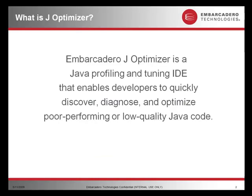In general, Embarcadero J-Optimizer is a Java profiling and tuning IDE that enables developers to quickly discover, diagnose, and optimize poor-performing or low-quality Java code.